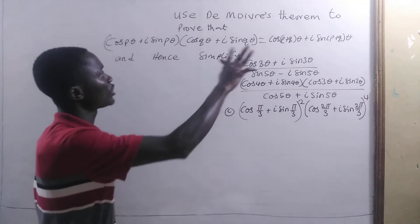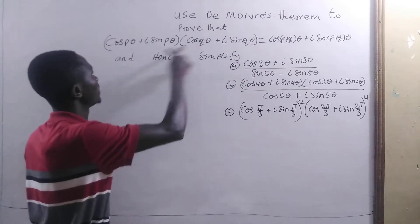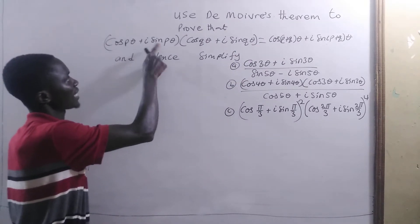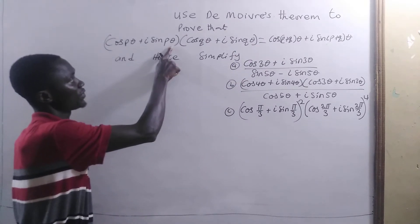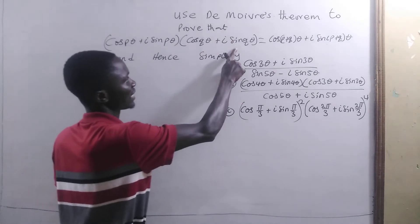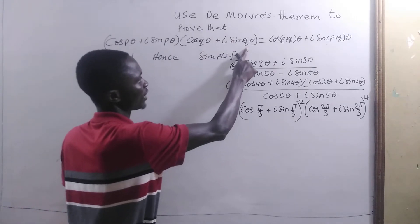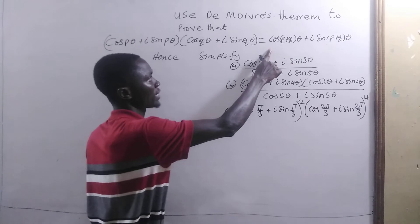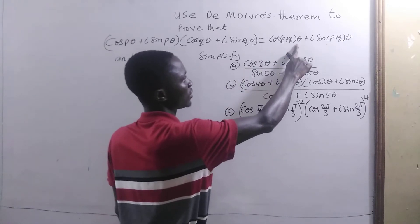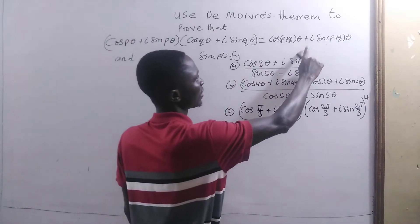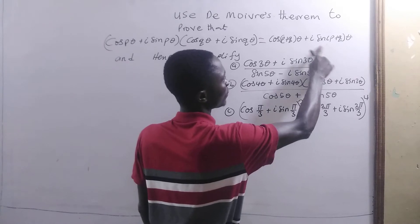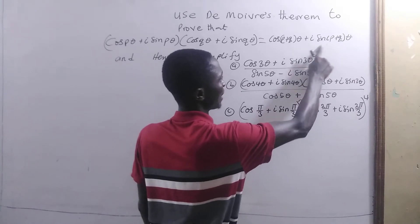Here we are to use De Moivre's theorem to prove that cosine(Pθ) + i·sine(Pθ) times cosine(Qθ) + i·sine(Qθ) equals cosine(P+Q)θ + i·sine(P+Q)θ.